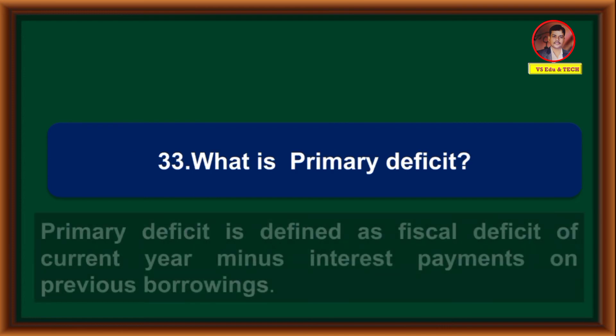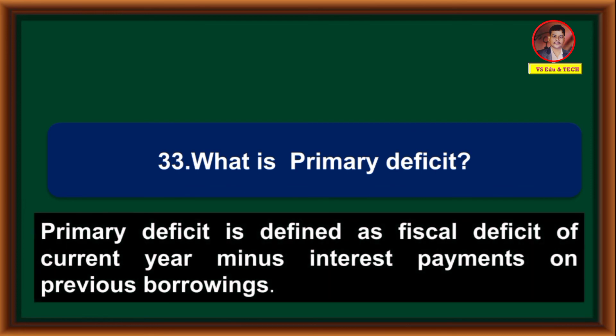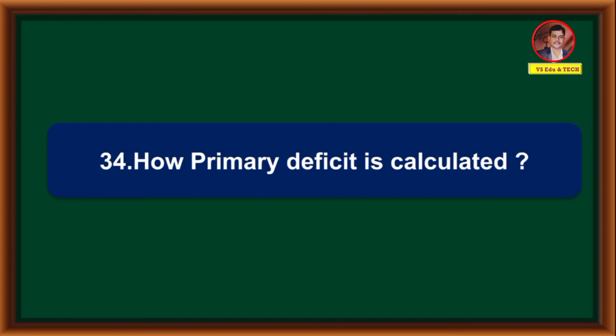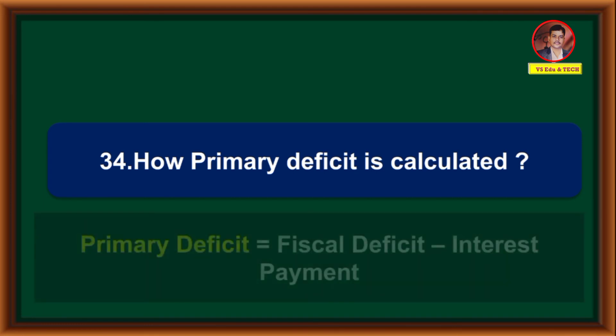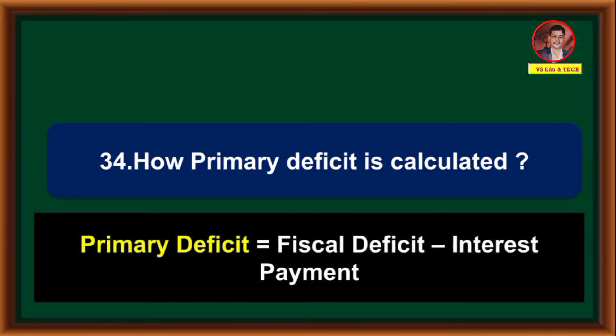What is primary deficit? Primary deficit is defined as the fiscal deficit of the current year minus interest payments on previous borrowings. How is primary deficit calculated? Primary deficit equals fiscal deficit minus interest payment.